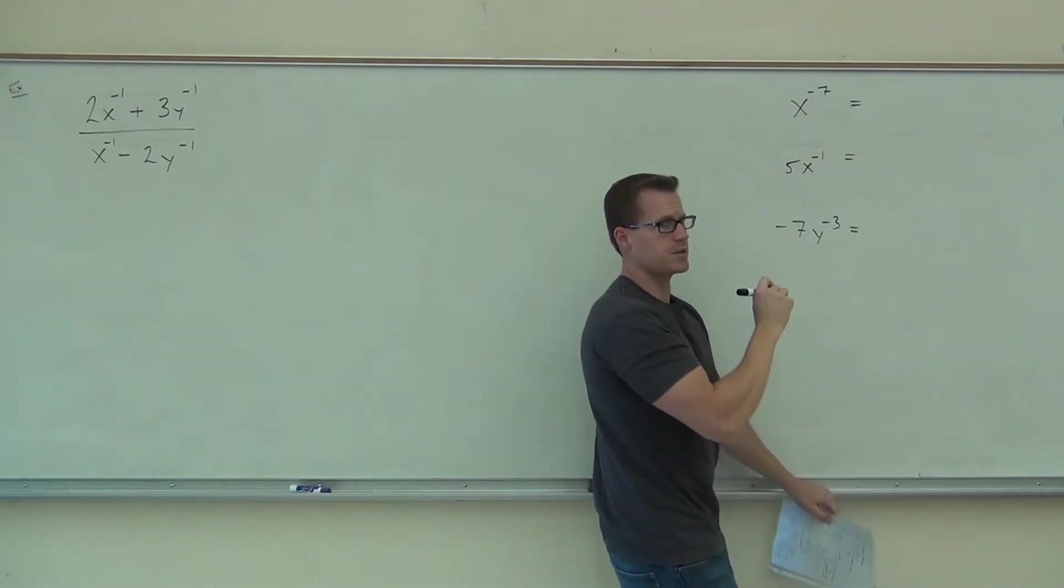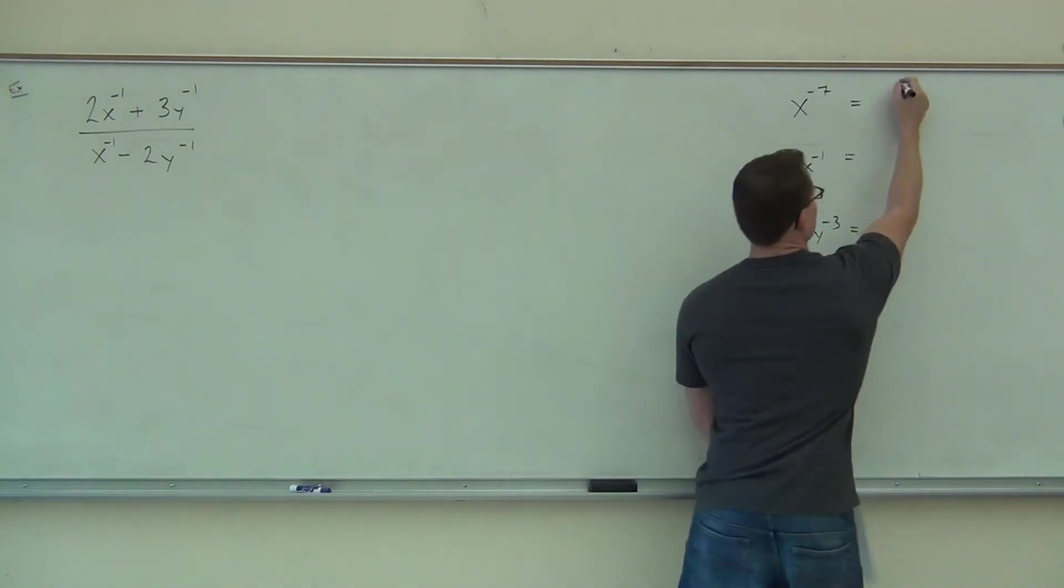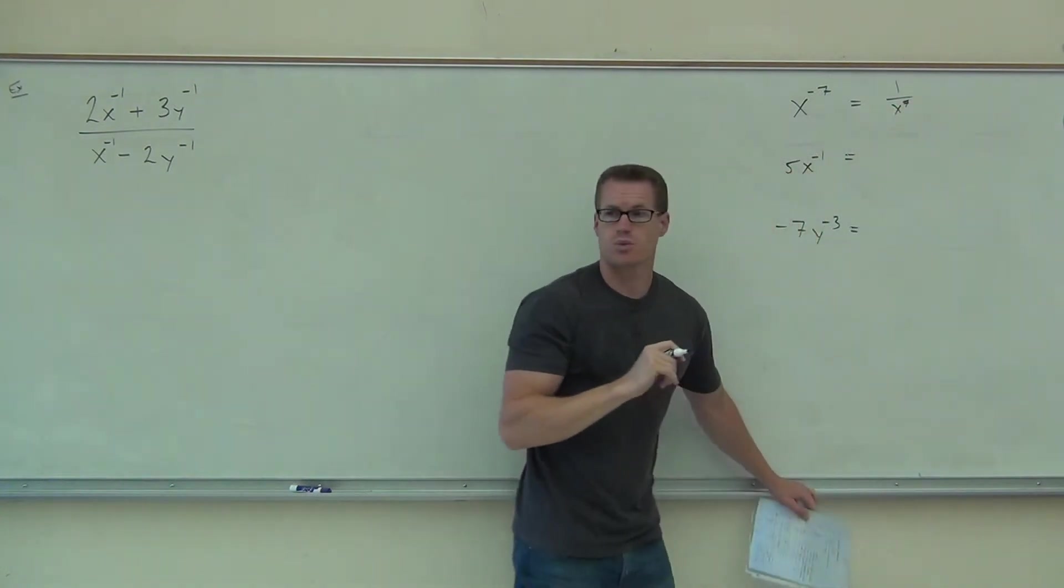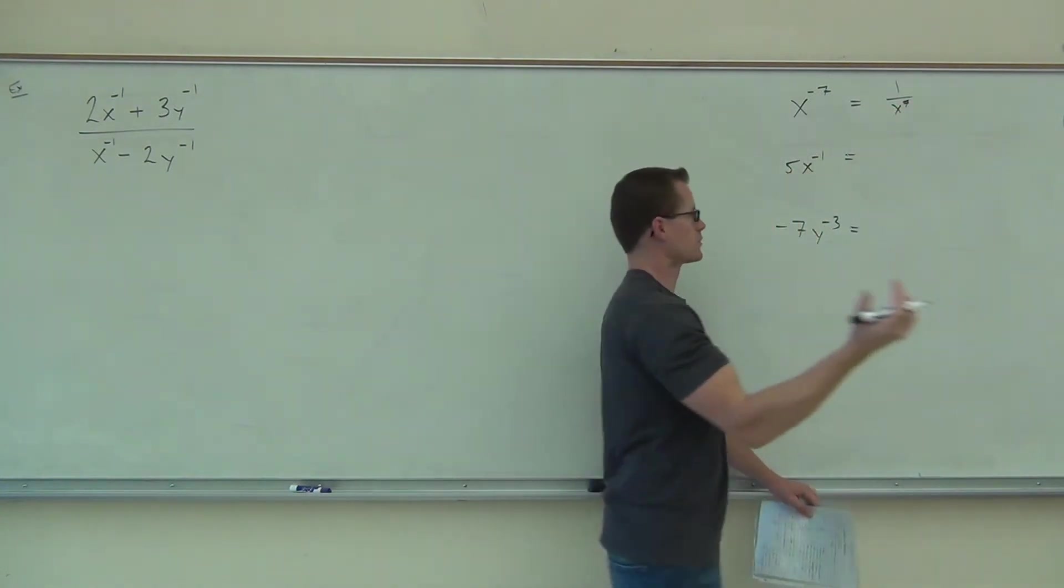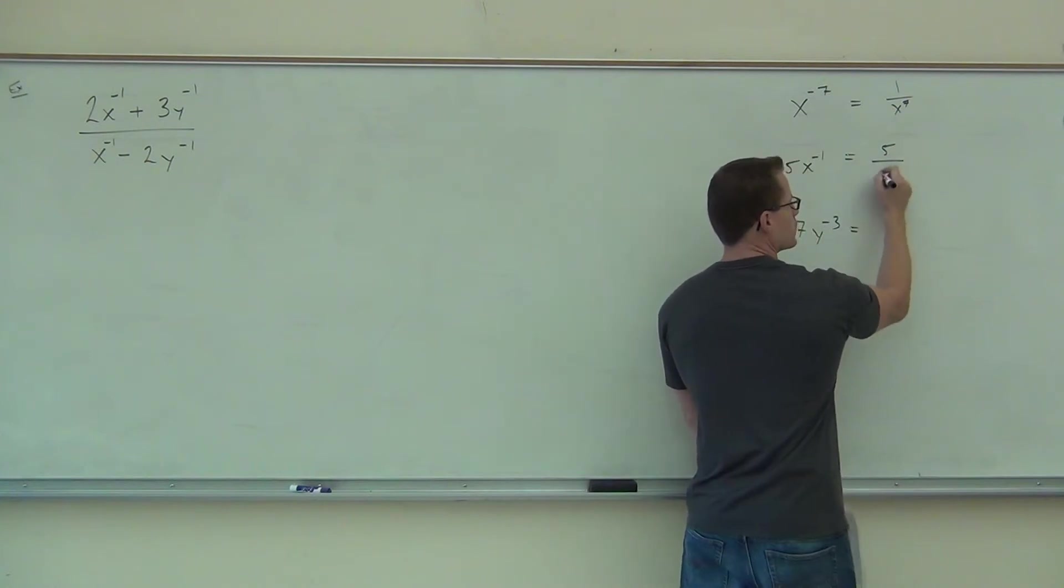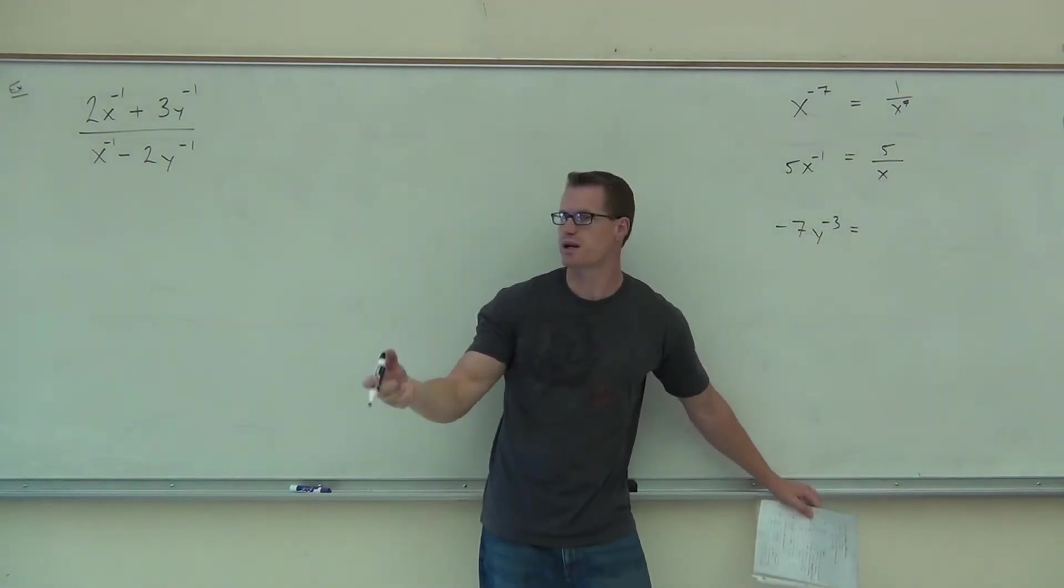First one is what, please? Good. Second one is what? Perfect. Yeah, the five stays on the numerator, over X just to the first. We don't write to the first, we just write X.